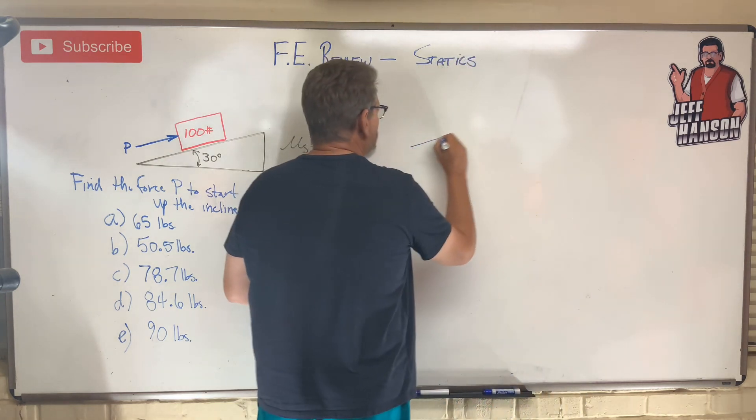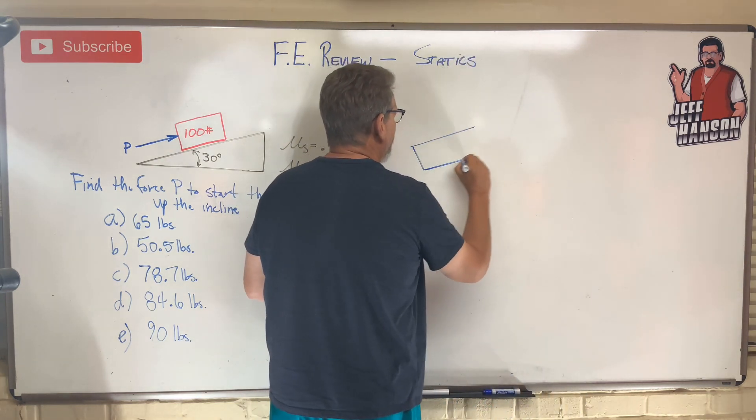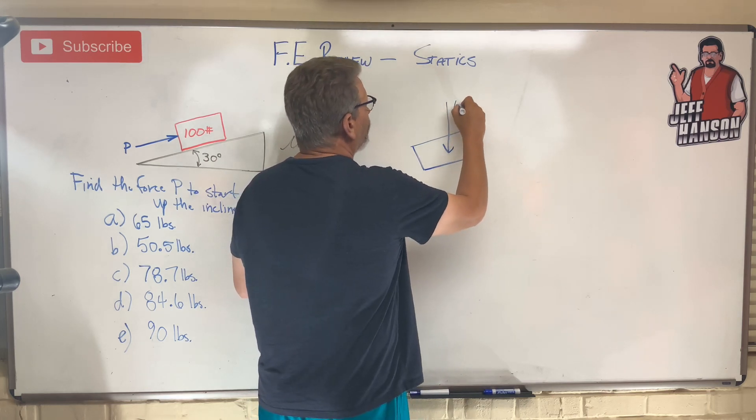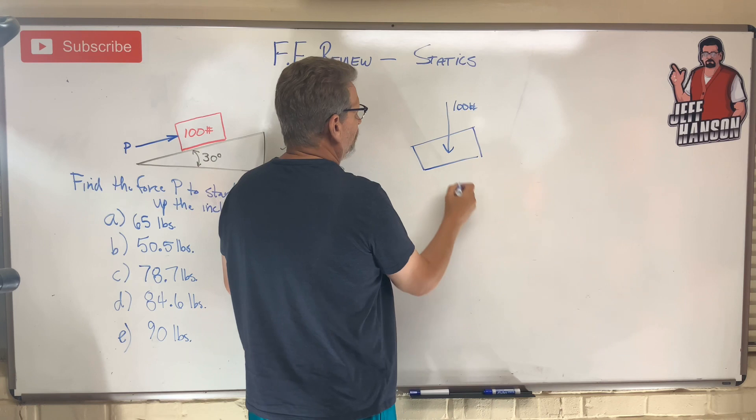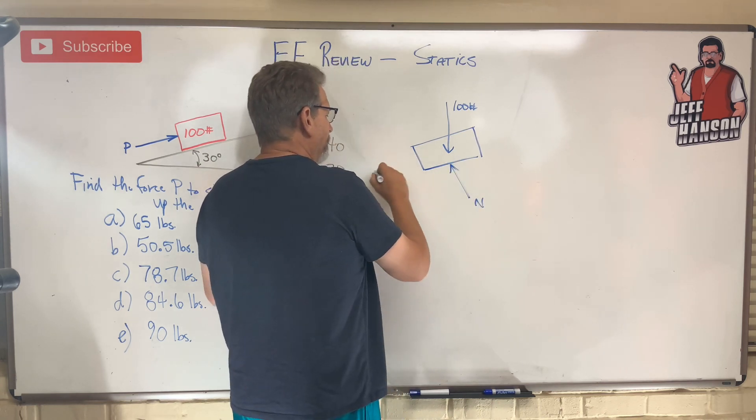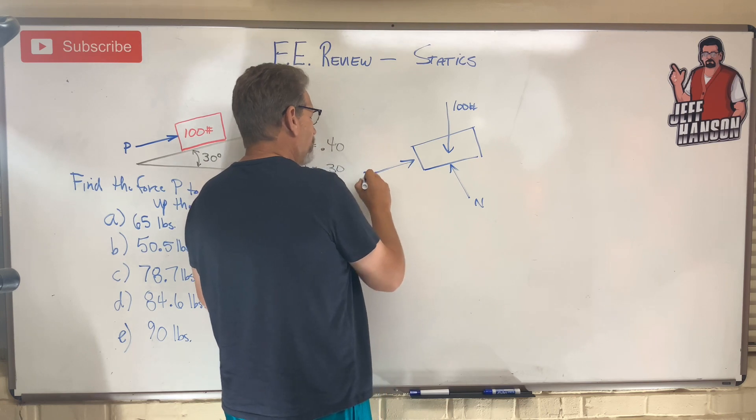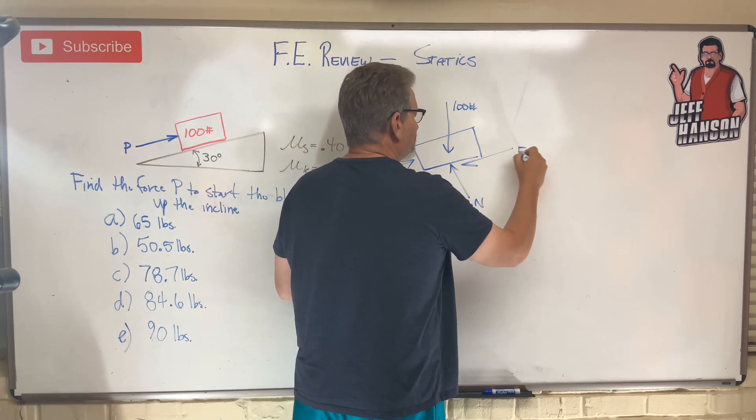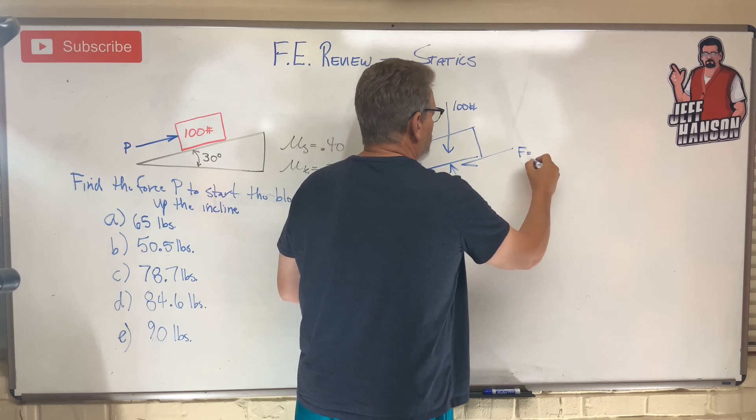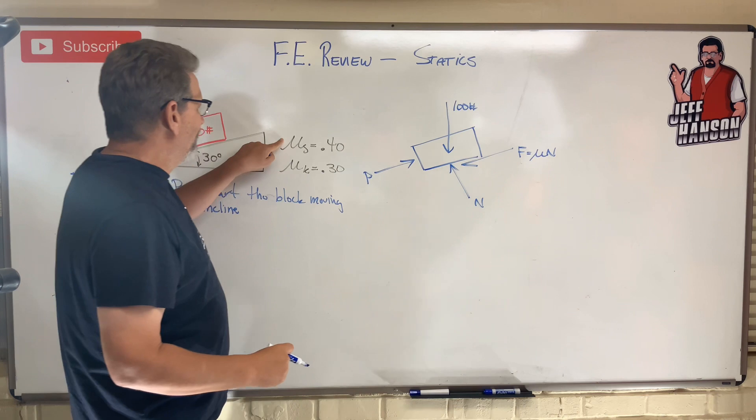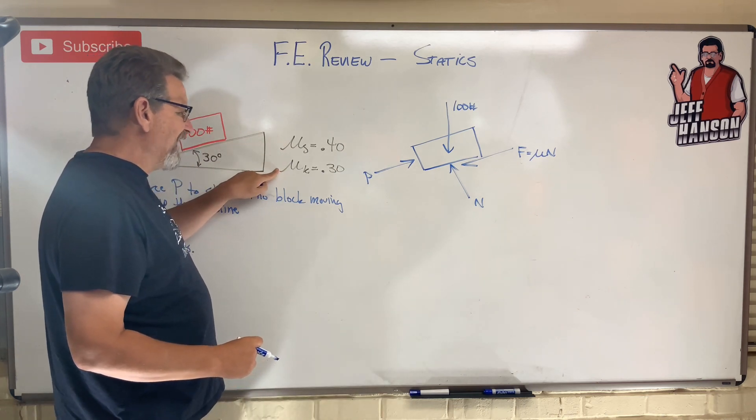Here's my box on the plane: 100 pounds straight down, P the force pushing, and then of course friction which is opposing, which is mu times N. They gave me mu sub s, they gave me mu sub k.